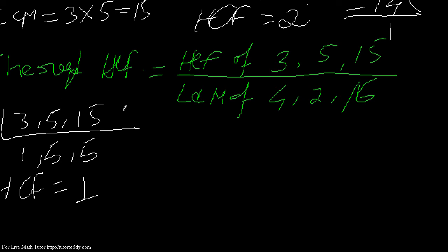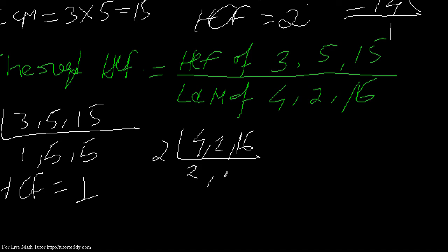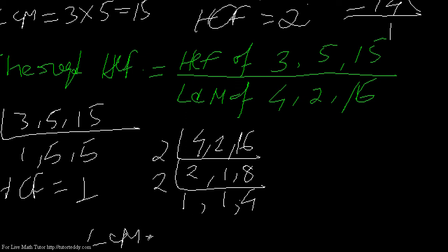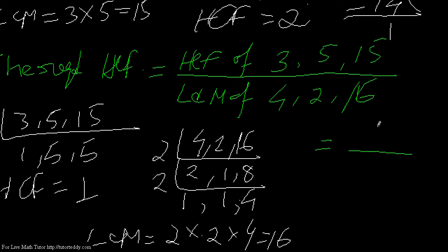Now the LCM of the denominators 4, 2, 16: divide by 2 to get 2, 1, 8; divide by 2 again to get 1, and 4. The LCM of these three denominator numbers is 2 × 2 × 2 × 2 = 16. So the required HCF equals HCF of numerators over LCM of denominators, which is 1/16. That is the required HCF of these fractions.